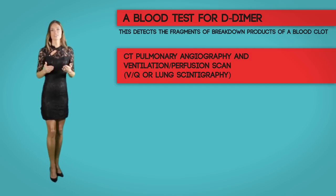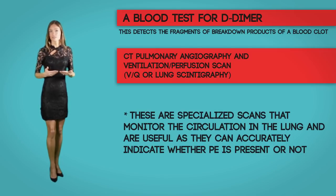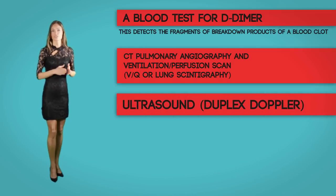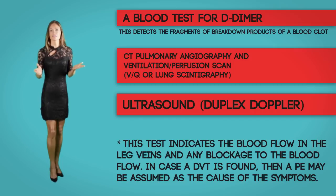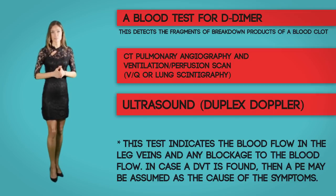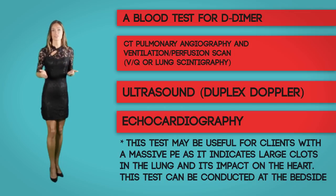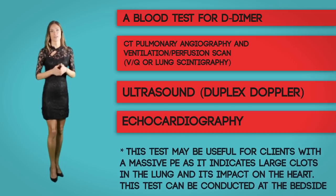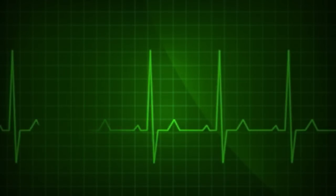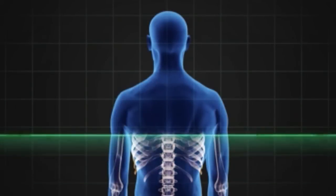The VQ scan and CT pulmonary angiography are specialized scans that monitor circulation in the lungs and can accurately indicate whether a PE is present. An ultrasound or Doppler test indicates blood flow in the veins and any blockage; if a DVT is found, a PE may be assumed as the cause. An electrocardiograph is useful for clients with a massive PE as it indicates large clots and their impact on the heart, though it cannot identify a small PE. A chest X-ray may be used to rule out pneumonia or other chest-related problems.